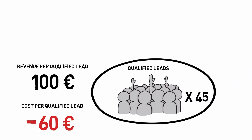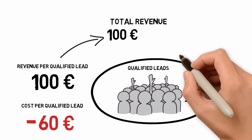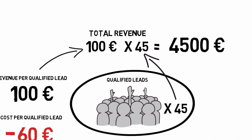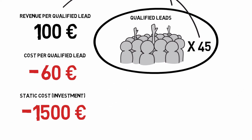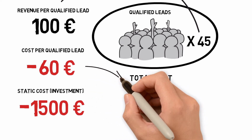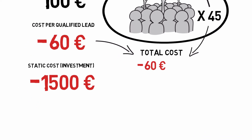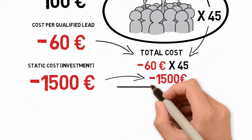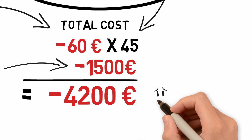We start off simple by looking at the total revenue. The value of each lead times the amount of leads shows us that you gained 4500 euro. That makes us happy. Unfortunately we also have to look at the cost. Each lead costs 60 and we multiply that with the amount of leads. Include your static cost here too. The total cost is 4200 euro. That makes us less happy.